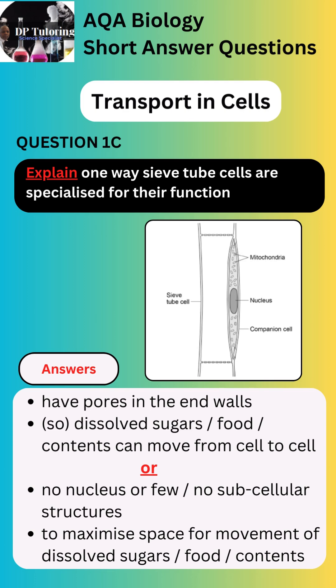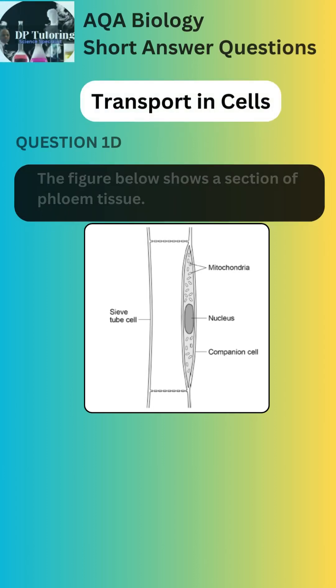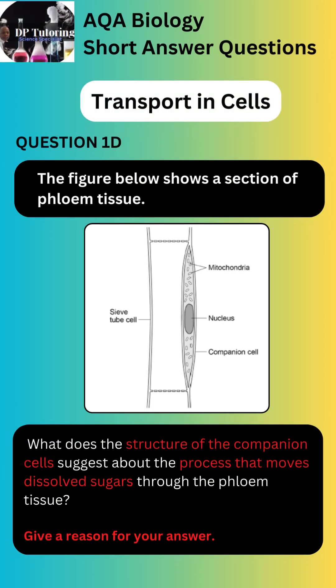Part D of the question asks what the structure of the companion cells suggests about the process that moves dissolved sugars through the phloem tissue. Give a reason for your answer. You will not get full marks without stating the reason.